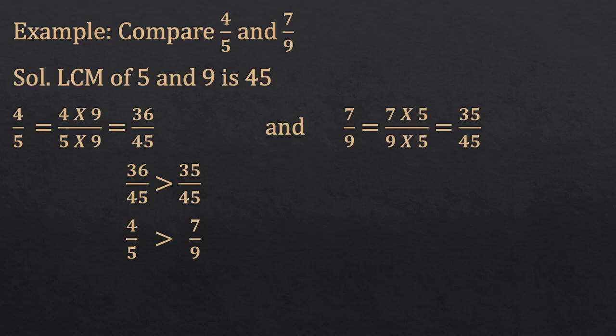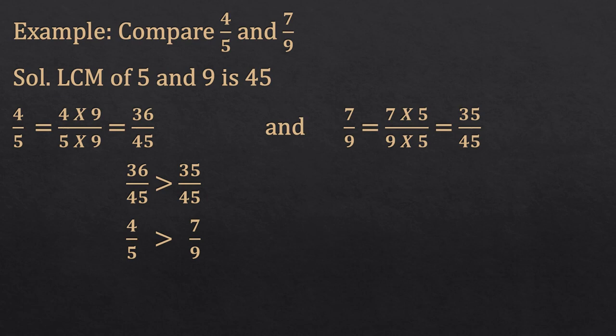For the second fraction 7 upon 9, we make the denominator 45 by multiplying by 5, so 7 × 5 = 35, giving 35 upon 45. Now we have 36 upon 45 and 35 upon 45 as equivalent like fractions. Comparing their numerators, 36 is greater than 35. Therefore, 4 upon 5 is greater than 7 upon 9.